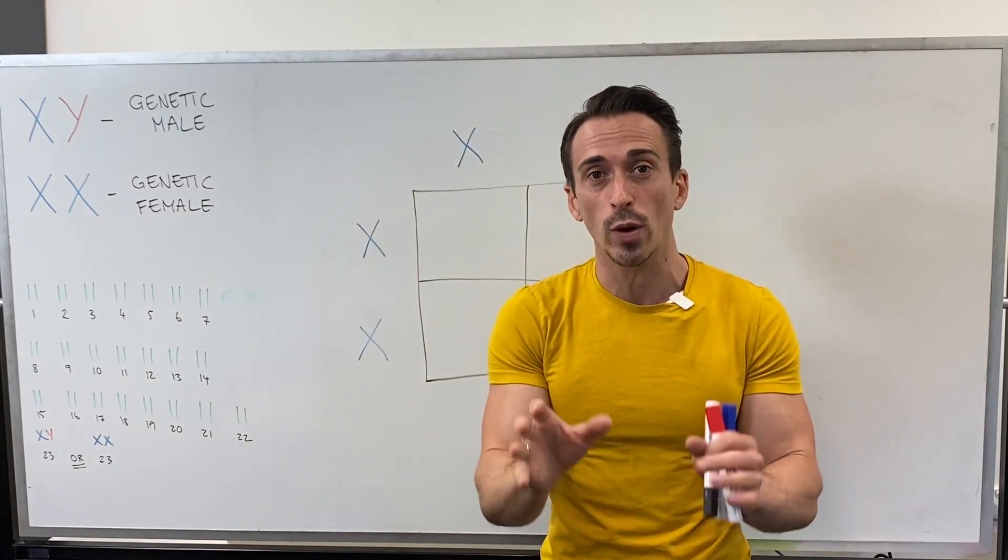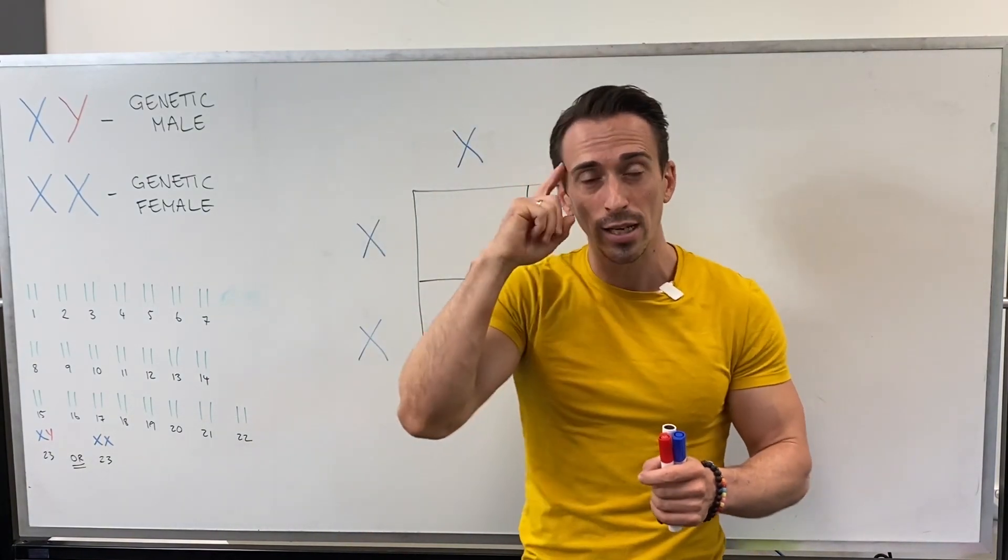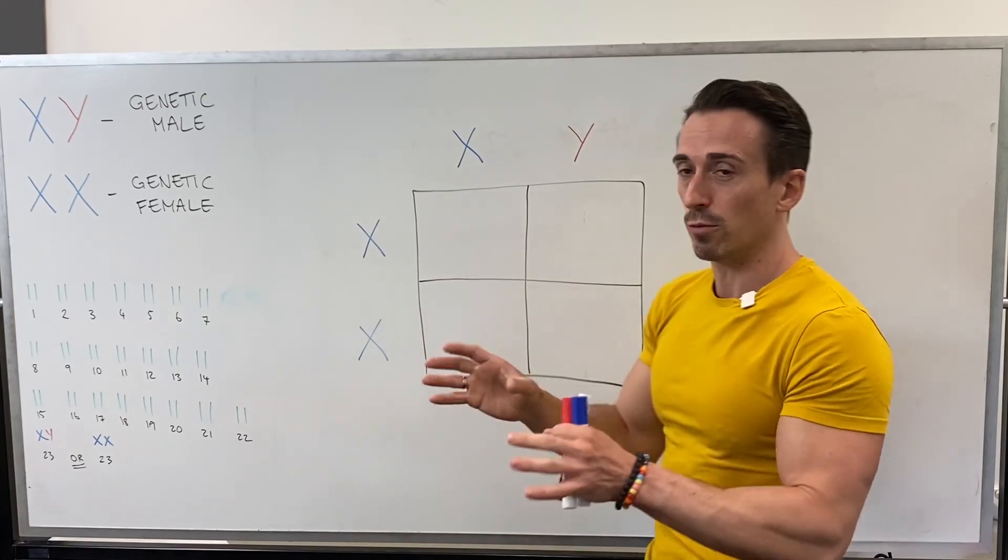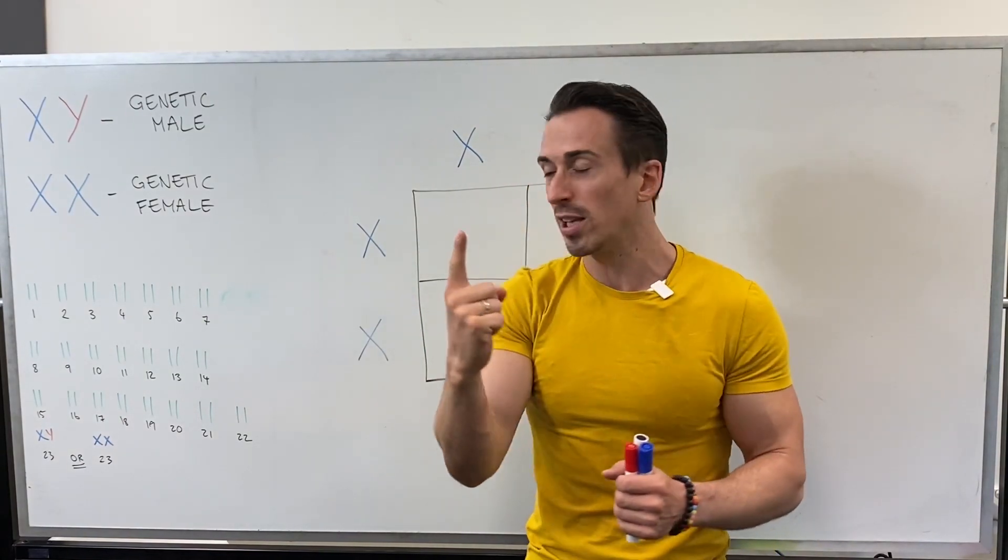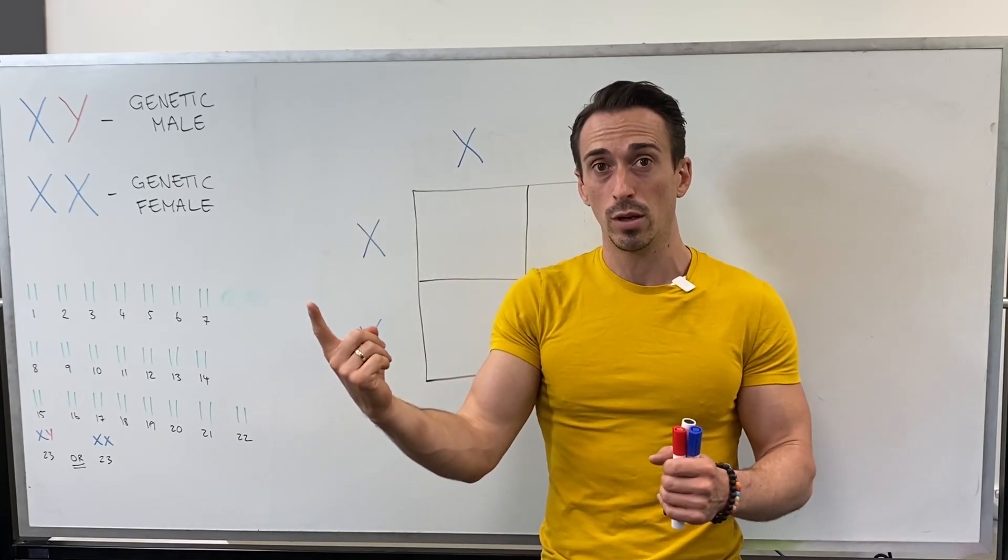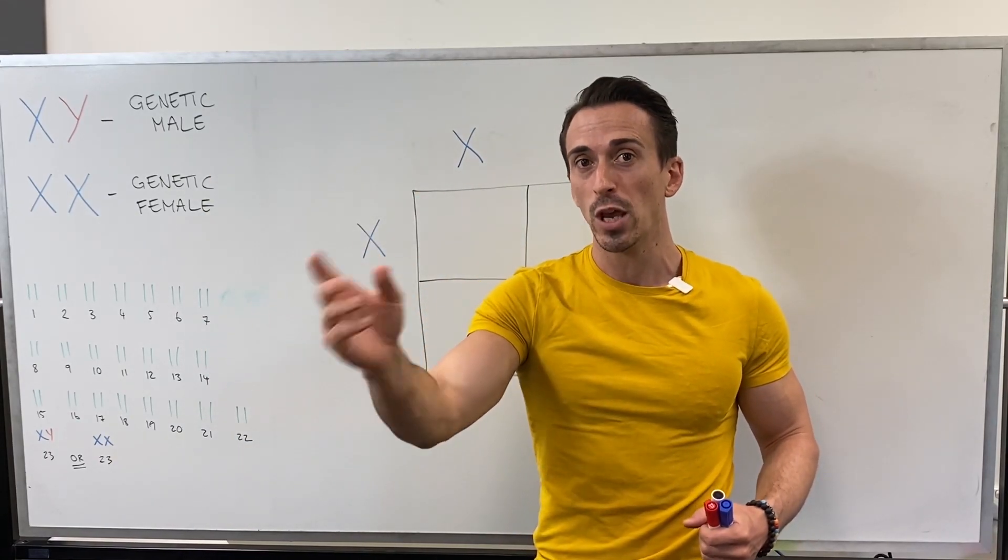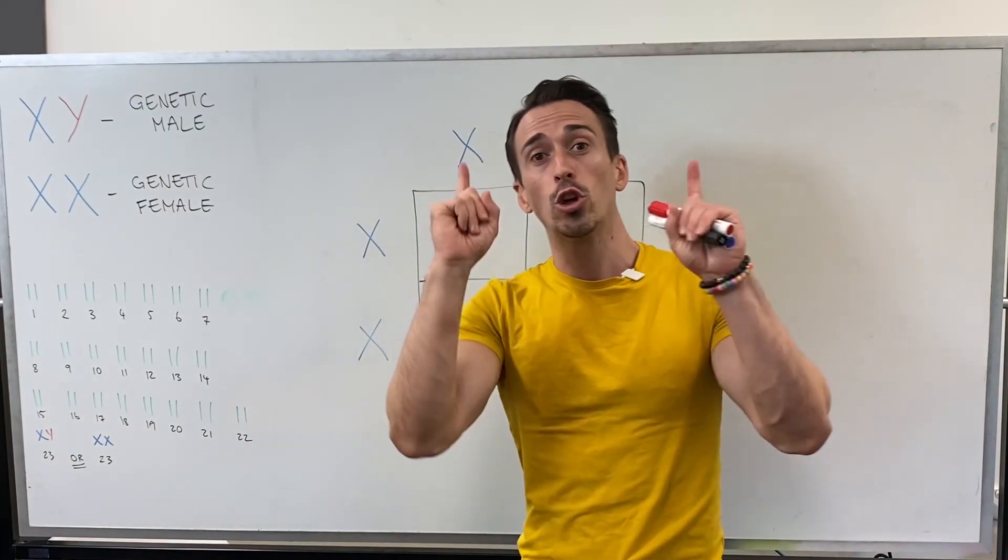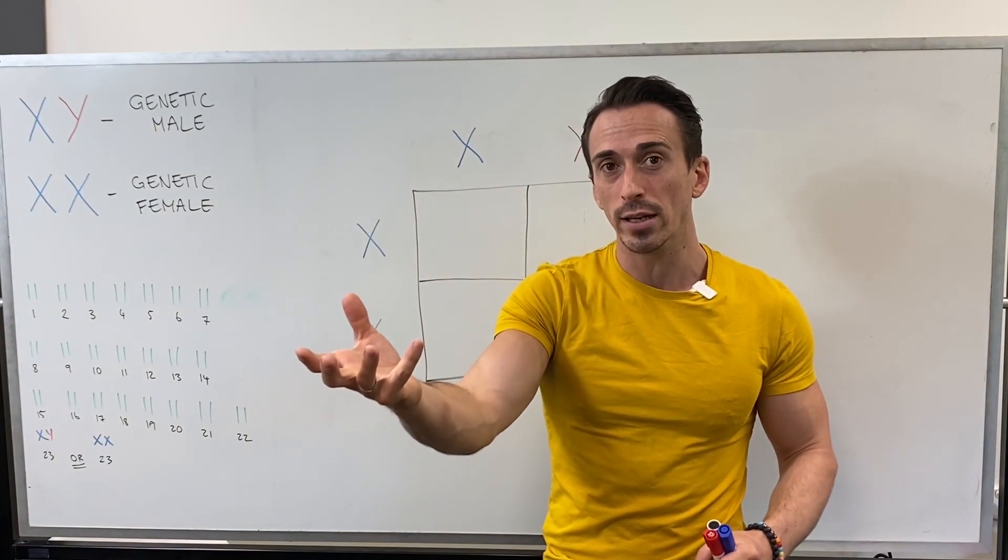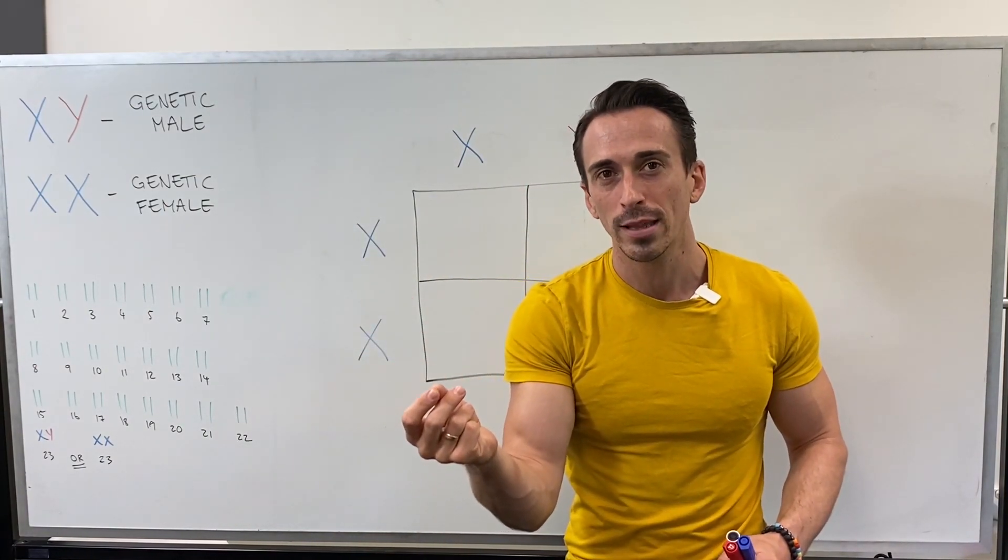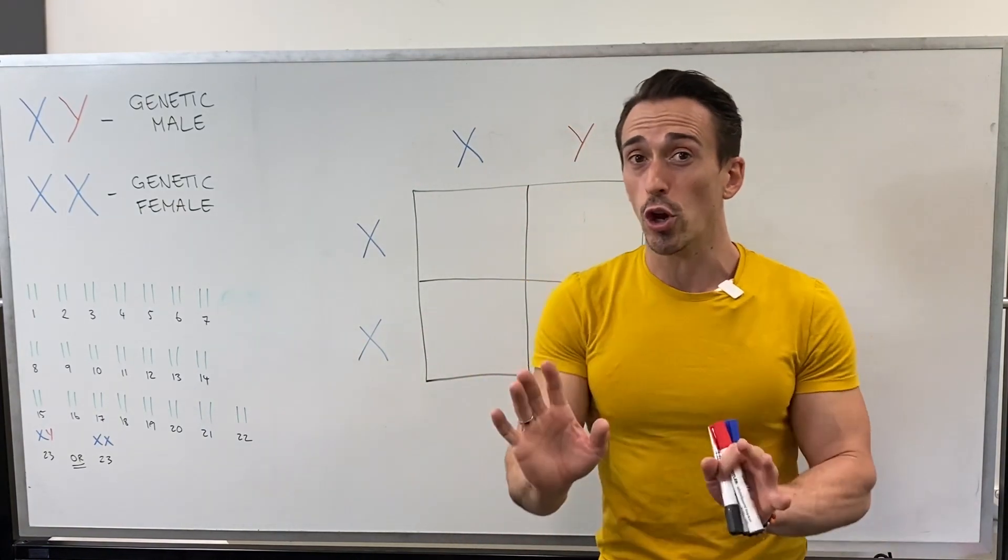We can still use a Punnett square, so that's great, and we still use the terms dominant and recessive inheritance. So you need to understand that. What does that mean? Remember, dominant inheritance means you only need a single copy, so it only needs to sit on one chromosome in order for you to manifest the trait, also known as the phenotype. Recessive inheritance means you need two copies of that gene in order to manifest that trait or have that phenotype. That means you need to get it on both copies of the chromosomes. That's recessive. So we can still use those terms.